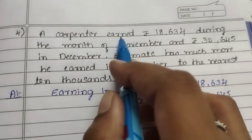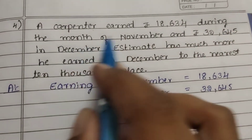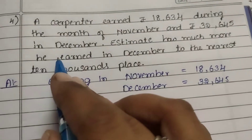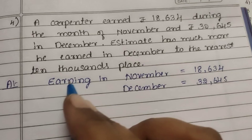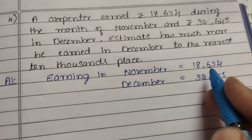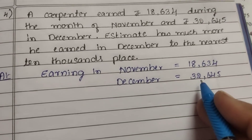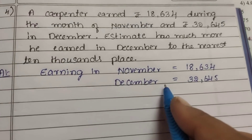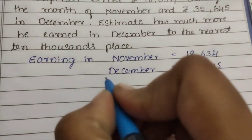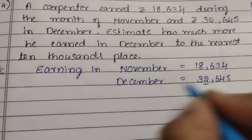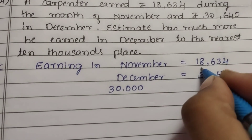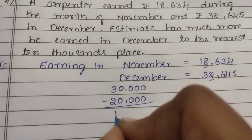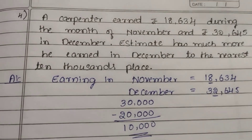4th question: A carpenter earned Rs. 18,634 in November and Rs. 32,645 in December. Estimate how much more he earned in December to the nearest 10,000. Answer: Earnings in November = 18,634; December = 32,645. More in December means subtract November from December. Estimate first: 32,645 — digit 2 rounds to 30,000. 18,634 — digit 8 rounds up to 20,000. Subtract: 3 minus 2 is 1. Answer is 10,000. This is Exercise 3.1.